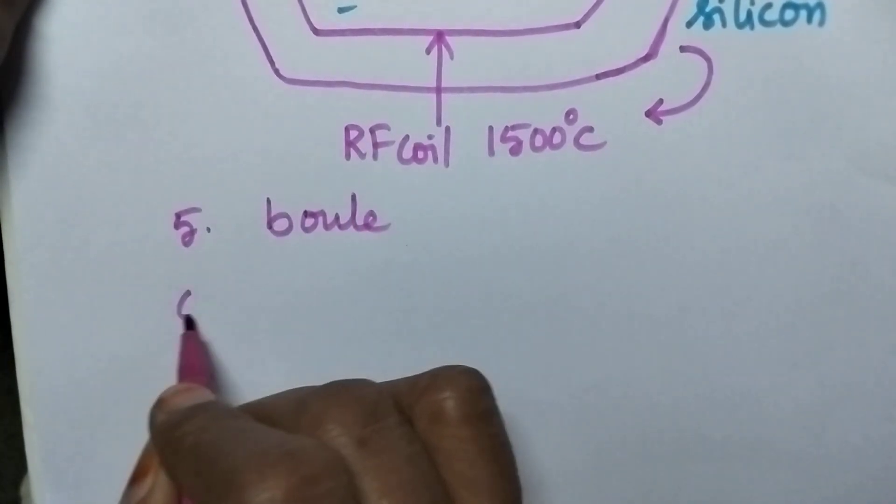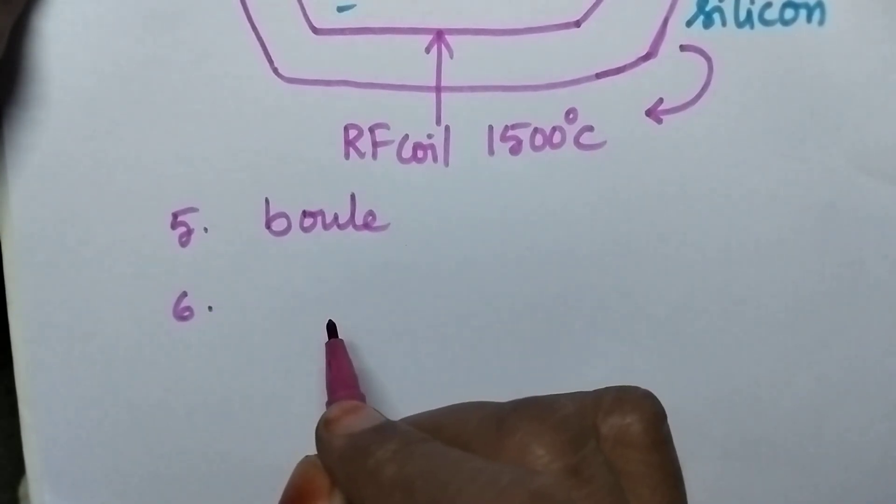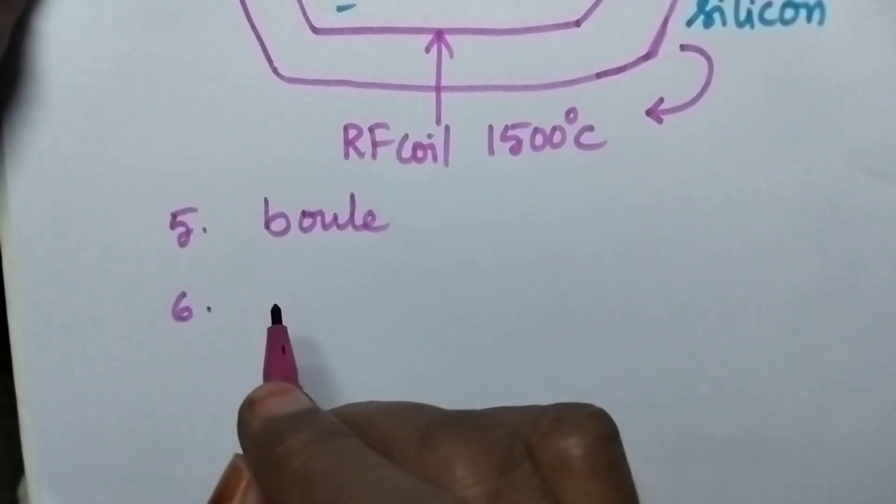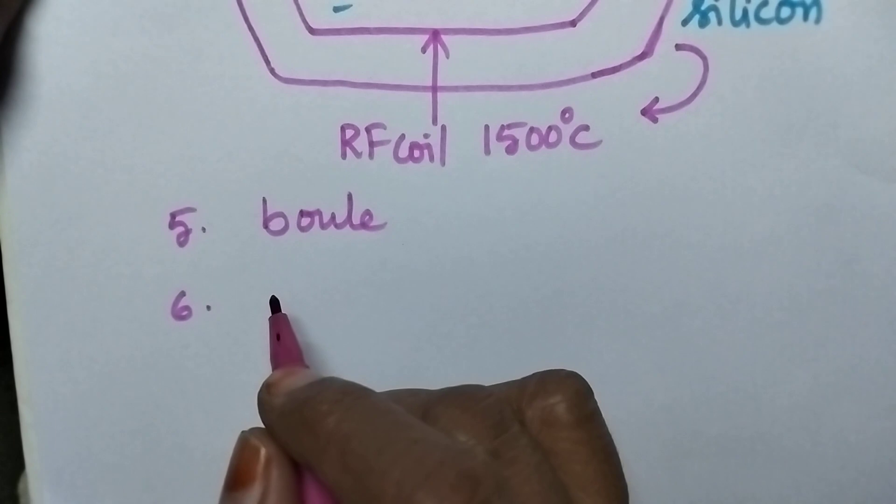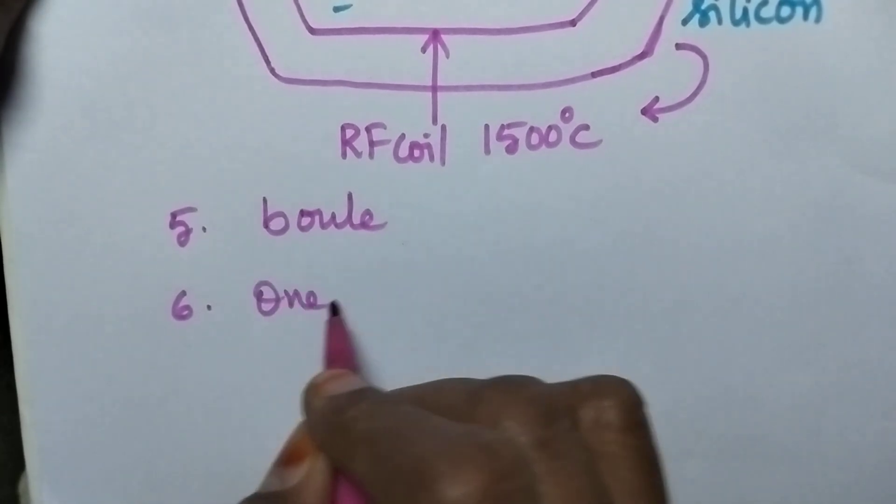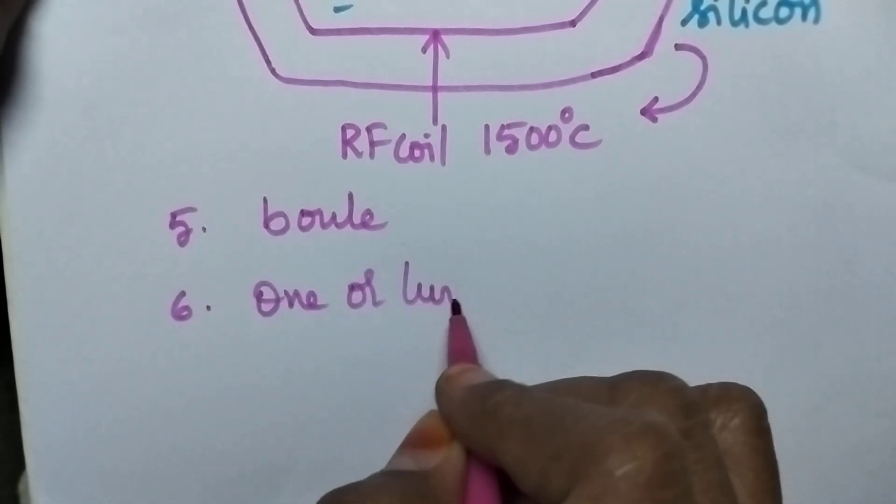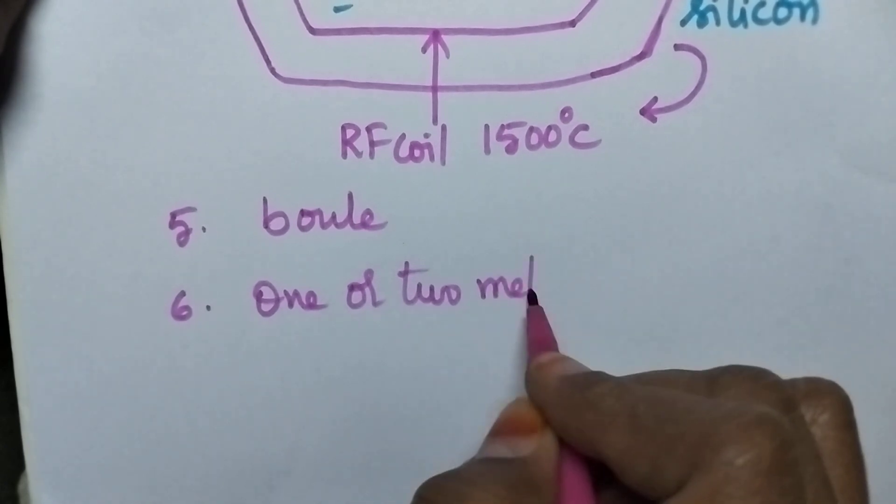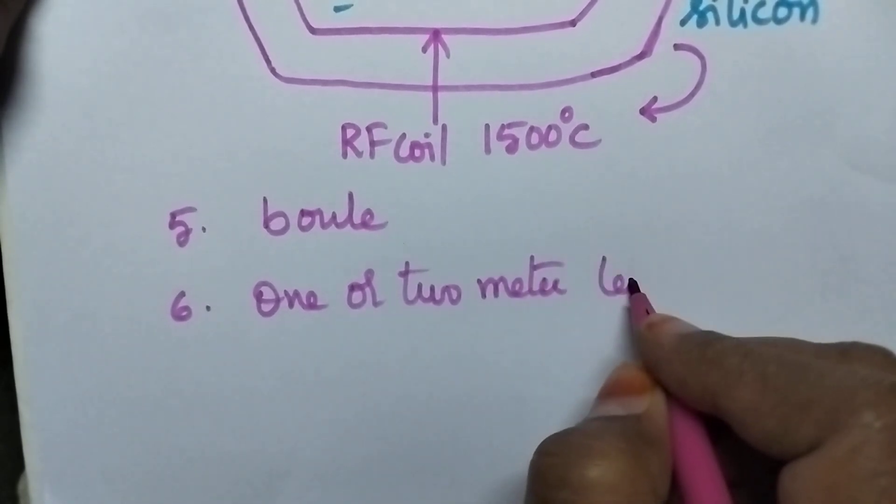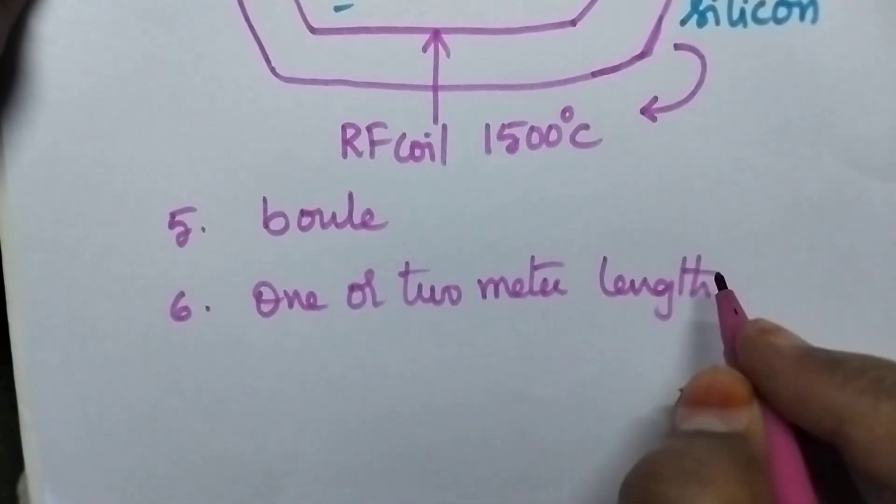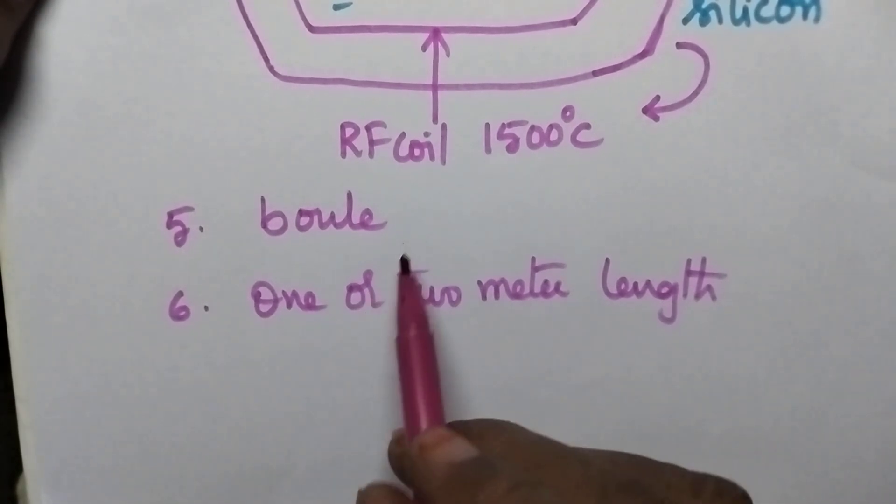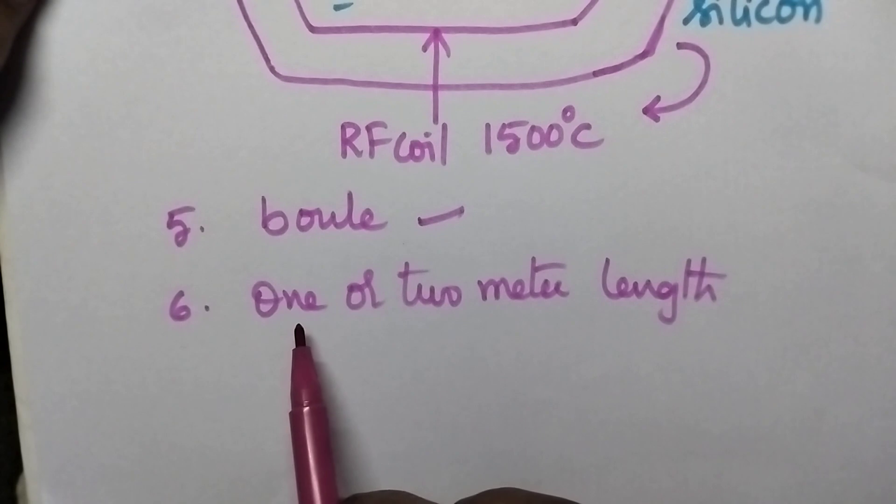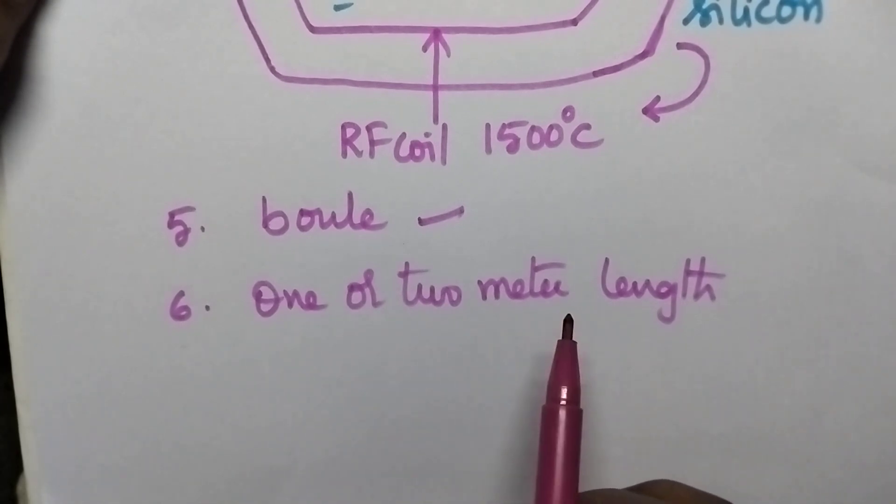Depending upon the amount of silicon taken, it is possible to prepare a baule of one or two meters length. At a time, it is possible to prepare the single crystal of silicon in the form of baule of one or two meters length.